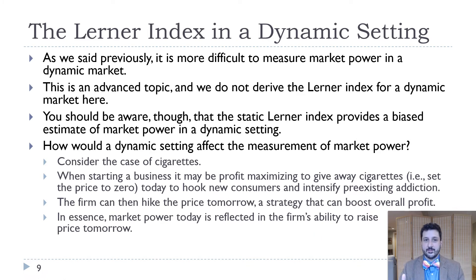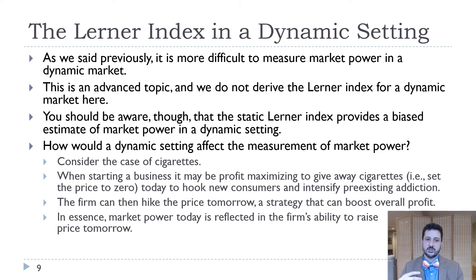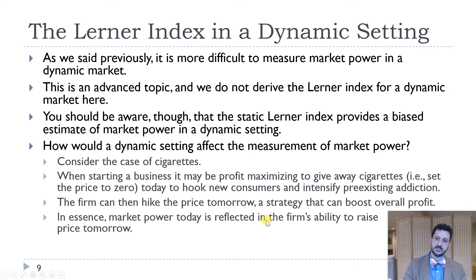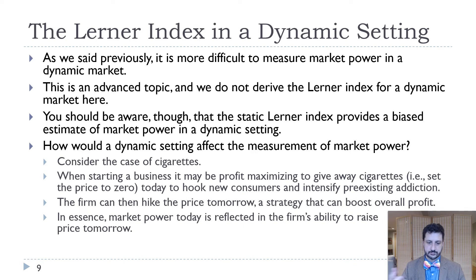An additional complication arises in a dynamic setting — a static Lerner Index might be a biased estimate of market power in either direction. The book's example is cigarettes: a firm might give away cigarettes for free or at a very low price to hook new customers and intensify a preexisting addiction, then hike the price tomorrow and boost overall profits. If we try to measure market power today when the firm is giving away cigarettes, it looks like it has no market power — but in fact it will have a lot more in the future. Dynamic issues like potential entrants or international competition make this much more complicated.